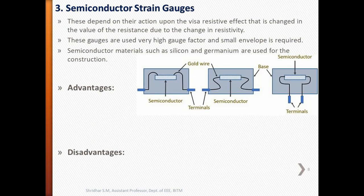Next we will discuss semiconductor strain gauges. Semiconductor strain gauges depend for their action upon the piezoresistive effect, that is the change in value of resistance due to change in resistivity. These gauges are used where a very high gauge factor and small envelope is required. Semiconductor materials such as silicon and germanium are used. The figure shows examples of semiconductor strain gauges where a semiconductor material is placed on a base and terminals are taken out using a gold wire.